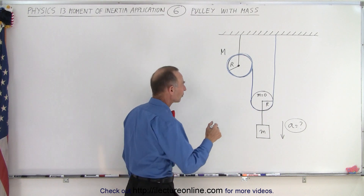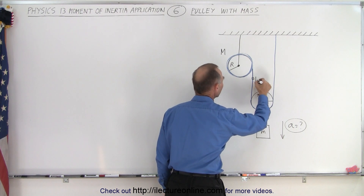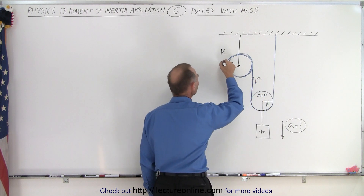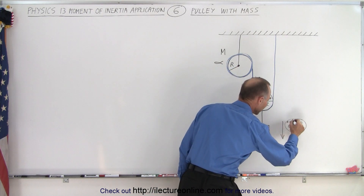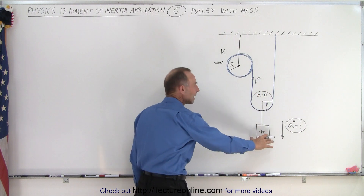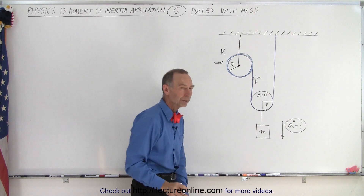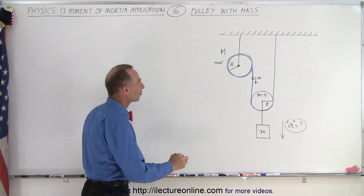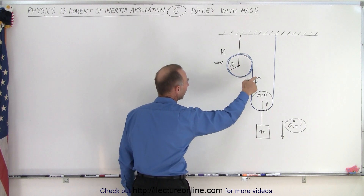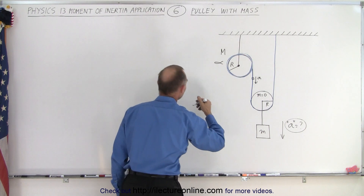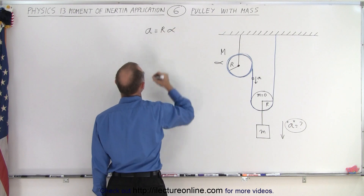First, we'll take a small piece on the string and consider the acceleration on the string and how it relates to the angular acceleration of the pulley. We put that acceleration in quotation marks because it may not be the same as the acceleration of the mass. So first we establish a relationship: we know the radius of the pulley, the angular acceleration, and the linear tangential acceleration are related as follows — a is equal to r times the angular acceleration.